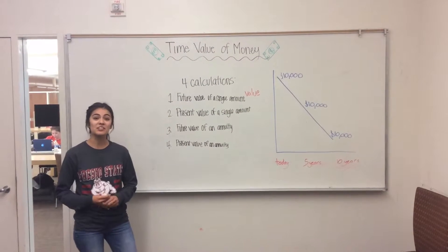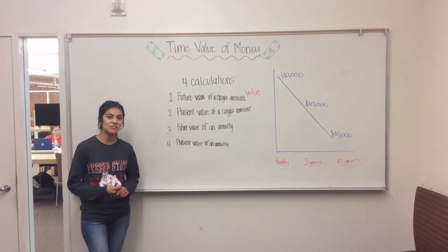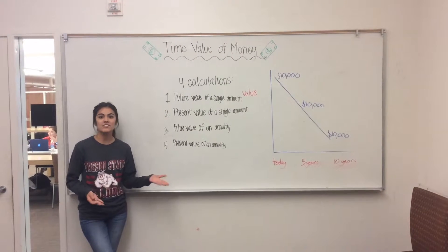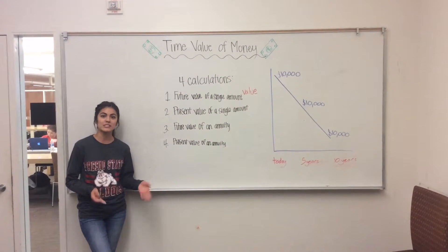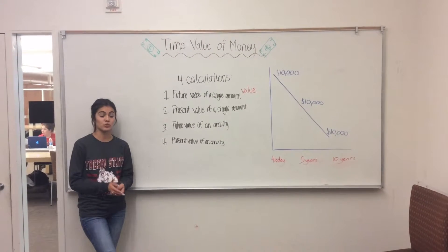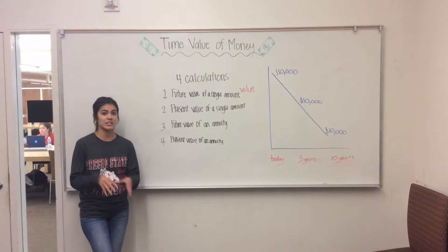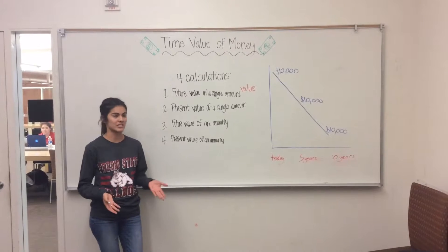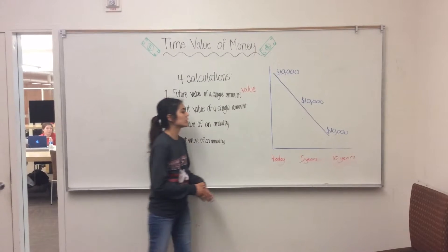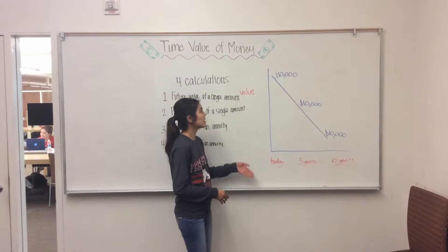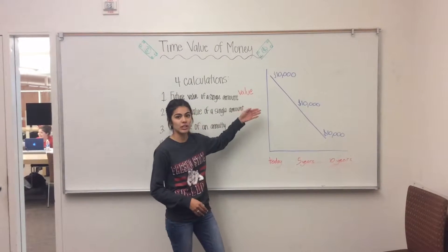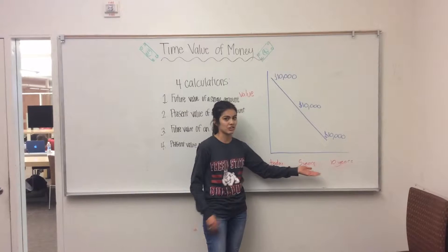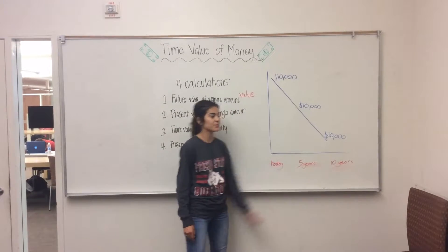My name is Kate Uribe, and our group is going to be going over the time value of money. The idea of the time value of money is that your money is worth more now than it is later because you have the opportunity to invest it. And if you look at the chart over here, the value of your money goes down over a period of time because you haven't invested it.